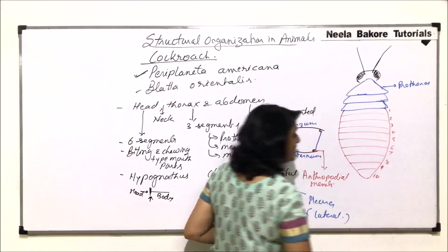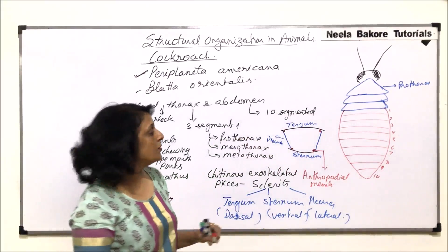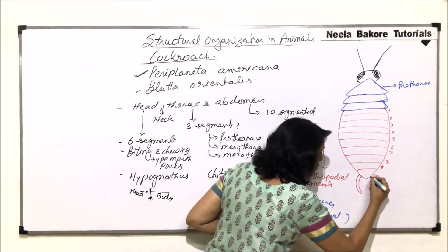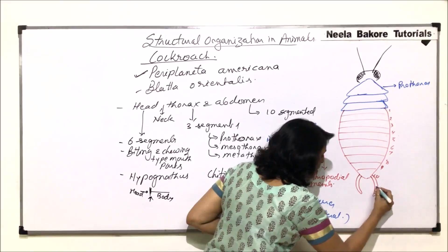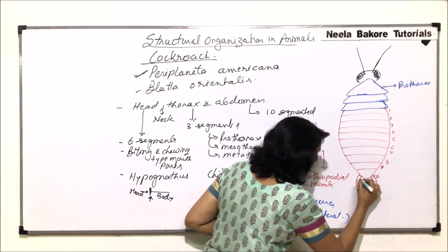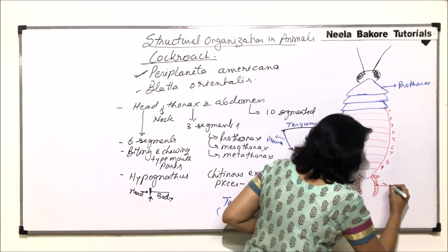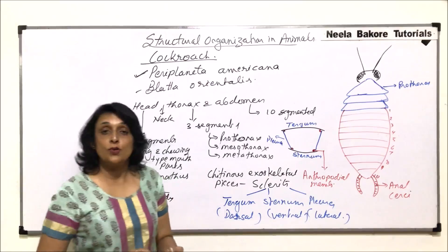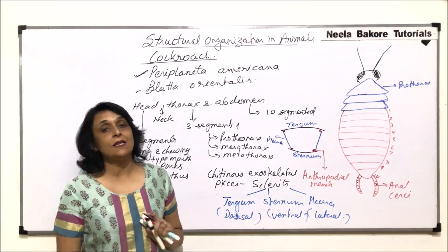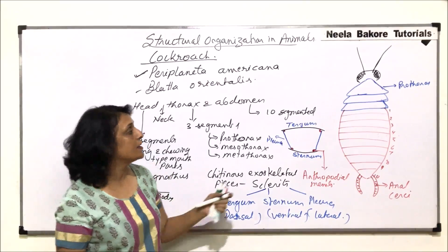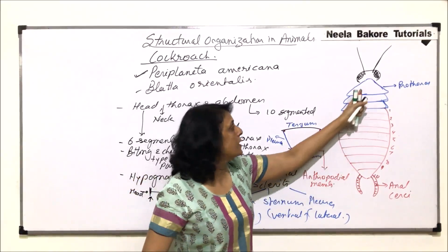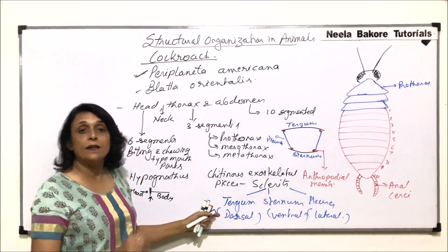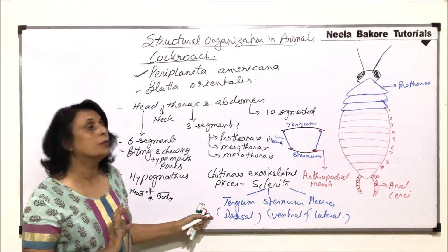In cockroaches, in the 10th abdominal segment, we find two extensions which are segmented structures. These are called anal cerci, and they are common in males as well as in females. This is what is visible from the dorsal side — the pieces visible are the tergal parts, that is the tergum.